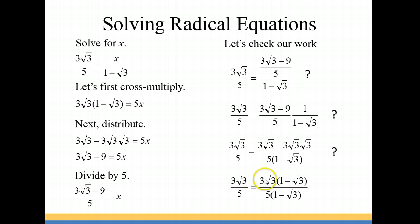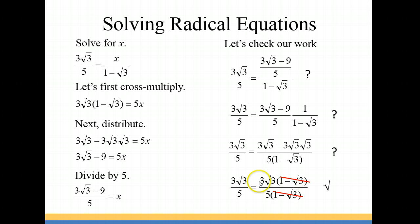Notice that if you take the 3√3 and divide it into the first term you get 1, and if you divide it into the second term you're left with √3. So now you can see that those (1 minus √3)'s are going to cancel, and we're left with 3√3 over 5, just like we have on the left side. So it checks out and we did our work correctly.